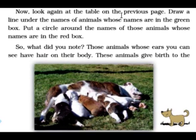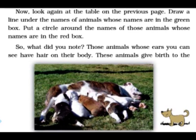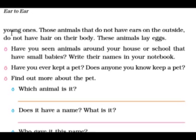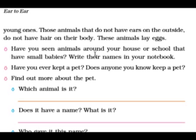Now look again at the table on the previous page. Draw a line under the names of animals in the green box. Put a circle around the names of those animals in the red box. What did you note? Those animals whose ears you can see have hair on their body, and these animals give birth to young ones. Those animals that do not have ears on the outside do not have hair on their body, and they lay eggs.